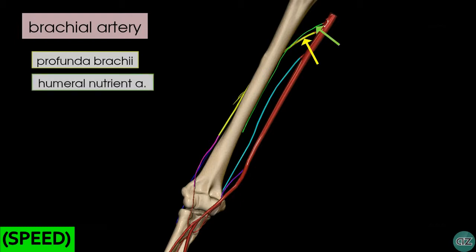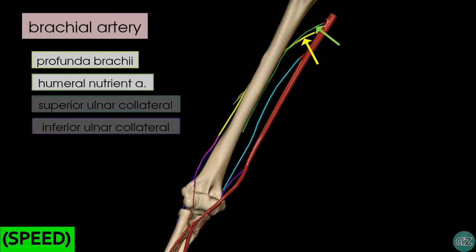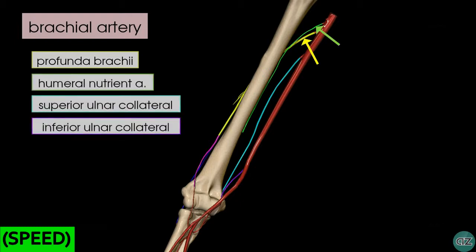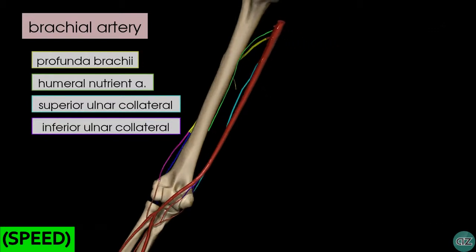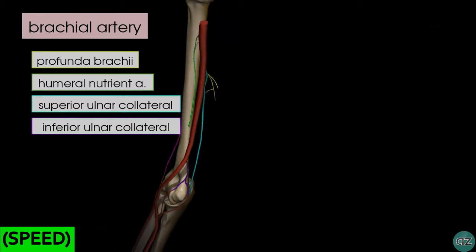You've got the nutrient artery to the humerus, seen here in green. Then you've got the superior and inferior ulnar collateral arteries. The superior ulnar collateral artery is seen in light blue coming off superiorly from the brachial artery, and the inferior ulnar collateral artery is seen here in purple coming off inferiorly.